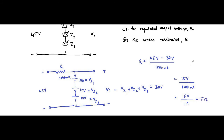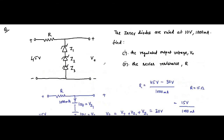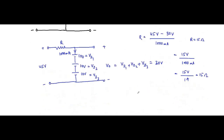R equals 15 volt divided by 1 ampere, which equals 15 ohm. The value of R is equal to 15 ohm and the output regulated voltage is 30 volt. This question is again related to zener diode circuits with diodes connected back to back, and that is the complete solution.